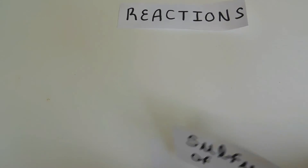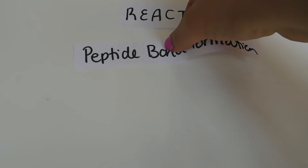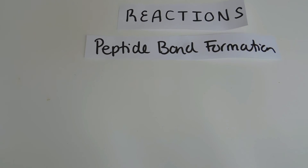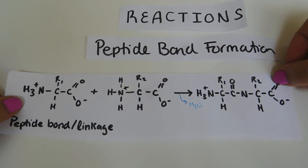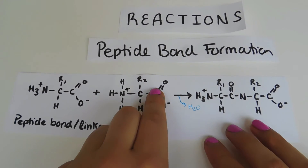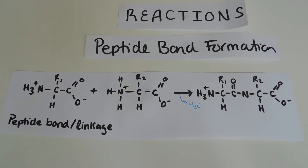The next reaction is peptide bond formation. Remember how we said amino acids are basically just building blocks or monomers? The peptide bond linkage is a polymerization reaction, meaning we're going to be making a polymer. A polymer is basically just joining those little building blocks or monomers together. Amino acids can be polymerized, forming linear chains known as amino acid chains, and these chains are really what make up proteins. Between each amino acid, they are joined head to tail through peptide bonds or linkages.